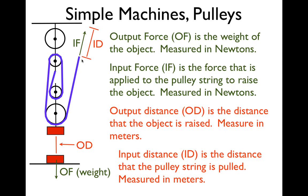So those are the four terms: output force (OF), input force (IF) — that's what you measure with the spring scale — the output distance (OD), that's the distance the object is raised, and the input distance, which is how far you pull the string. You should be familiar with those four terms and how they relate to pulleys.